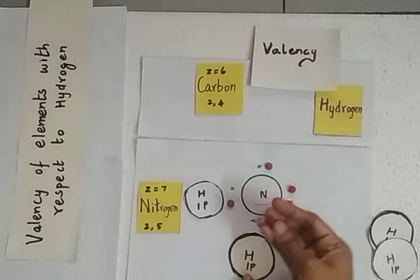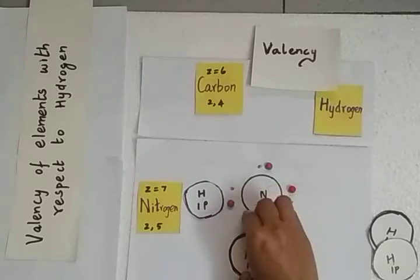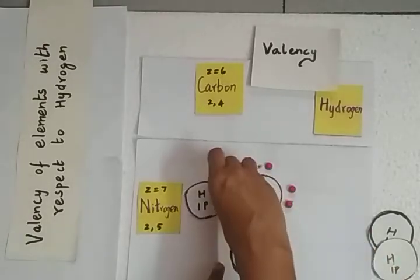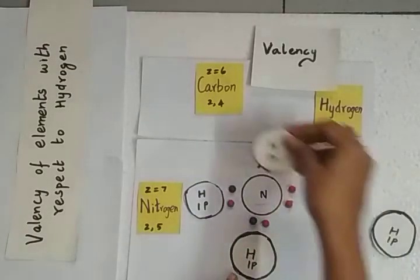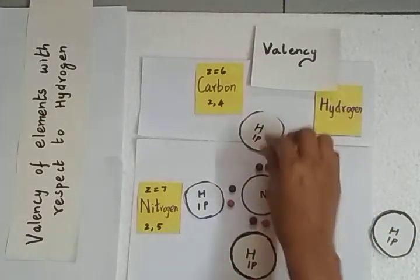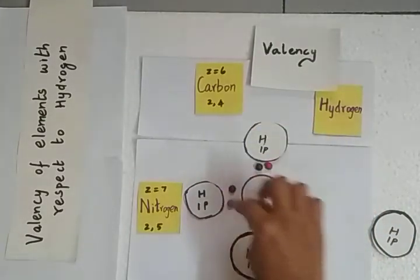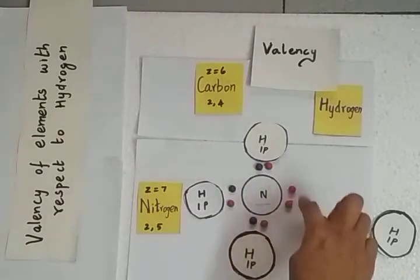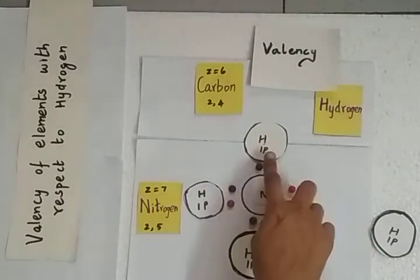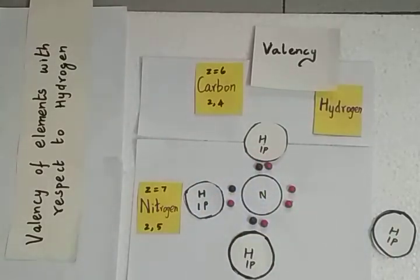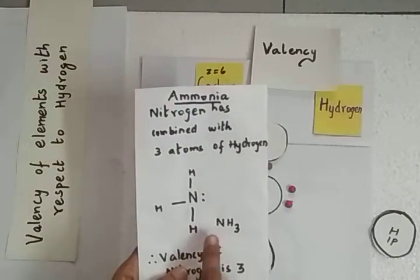One hydrogen atom will share one electron with nitrogen, another hydrogen atom will share one electron, and another hydrogen atom will share one more electron — represented with purple beads. Since nitrogen needs 3 more electrons to complete its octet, it combines with 3 hydrogen atoms, resulting in the formation of ammonia.